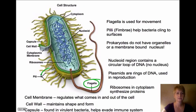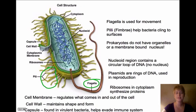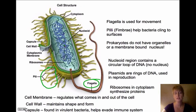Bacteria also have pili. These are not necessarily for movement but are more to help the bacteria cling to the surface that they're on. Prokaryotes or bacteria do not have any organelles inside. When you look in here you're not going to see a Golgi apparatus, a nucleus, or the endoplasmic reticulum — those things you learned about when studying eukaryote cells. They don't have those things.